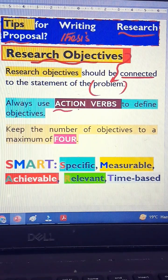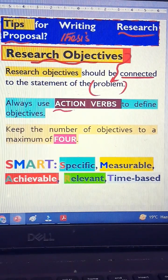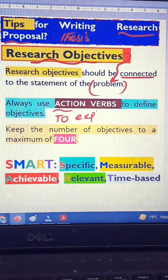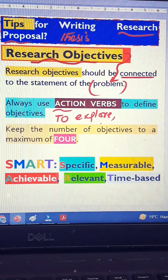Always use action verbs to write your objectives. Action verbs means start always like this: to explore, to synthesize, to investigate, to fabricate.